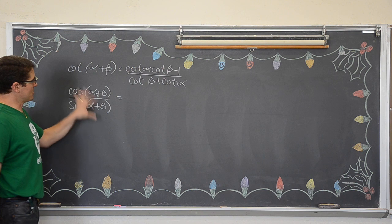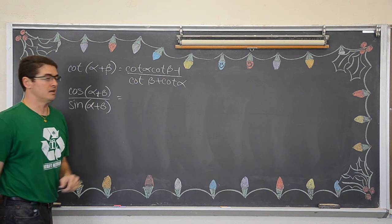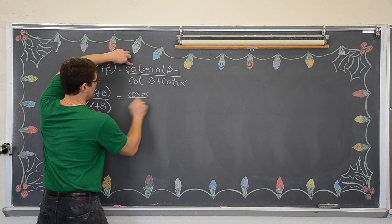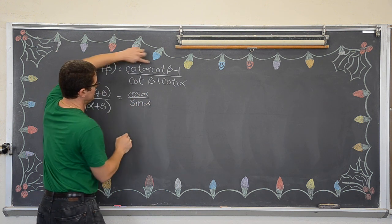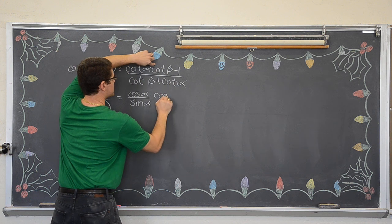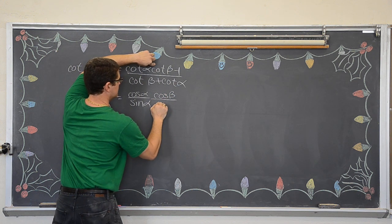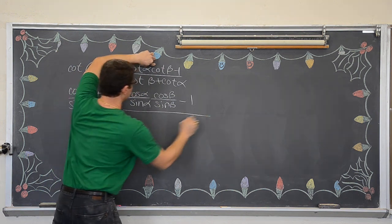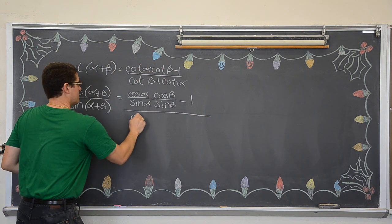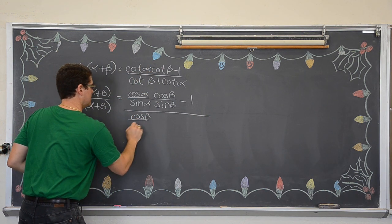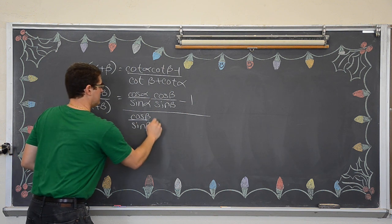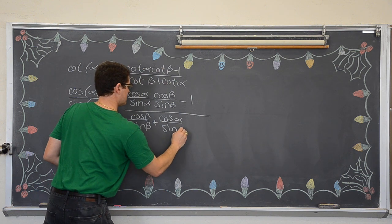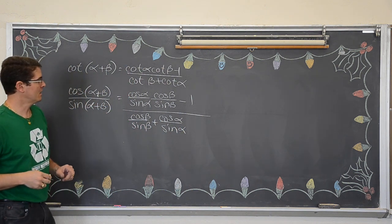The right hand side has terms of cotangent, so we rewrite each cotangent in terms of sine and cosine. That gives us: cosine alpha over sine alpha, times cosine beta over sine beta, minus one — all over cosine beta over sine beta, plus cosine alpha over sine alpha.